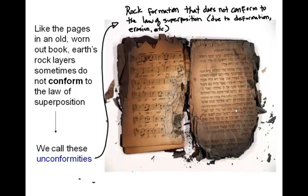Rocks do this too. When they don't conform to the law of superposition and you have erosion and tearing away of some of the rock, you have an unconformity. It's important to understand this because with unconformities, you lose part of the history of that rock. We can start looking at rocks and learning the history of the area, but when erosion takes part of it away, you lose the history.